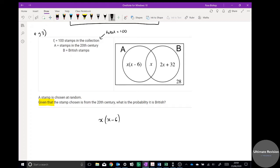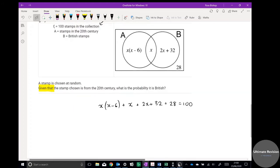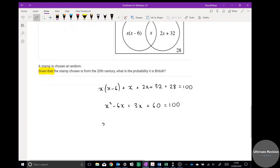So I know that the total sum must equal 100, so we've got x minus 6 plus all of these bubbles added together must equal 100. So if I tidy that up a little bit, we've got x squared minus 6x plus there's three x's there, plus that's going to be 60 equals 100.